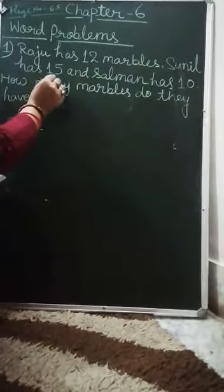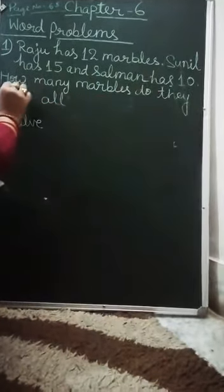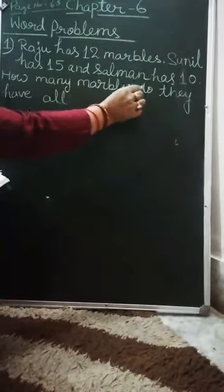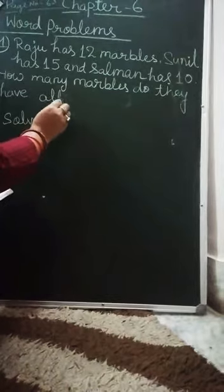Raju has 12 marbles, Sunil has 15, and Salman has 10. How many marbles do they have all together?